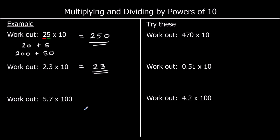Multiplying by 100 is the same as multiplying by 10 twice, so digits shift two columns up. For 5.7 times 100: the 5 becomes 500 (×10 gives 50, ×10 again gives 500) and the 0.7 becomes 70, giving 570. Pause the video, try the three questions, and press play when you're ready to carry on.